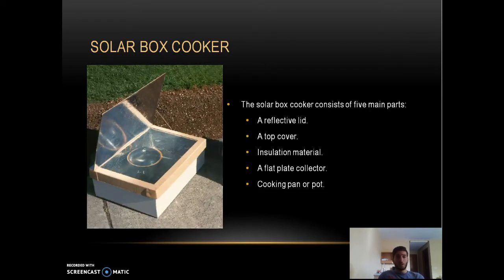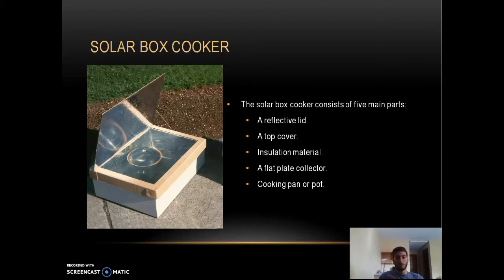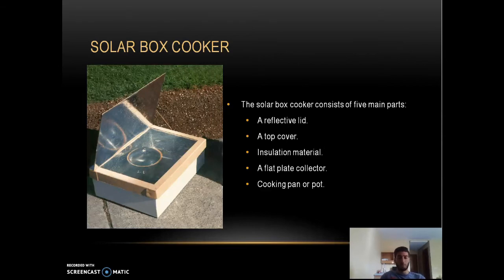The solar box cooker consists of five main parts as seen in the picture. It has a reflective lid that reflects sun radiation into the box, a top cover made of transparent material — usually glass — to create a greenhouse effect and trap heat inside. Insulation material keeps heat from escaping through the walls and floor. There is also a flat plate collector at the bottom of the pot, and finally a cooking pan or pot.